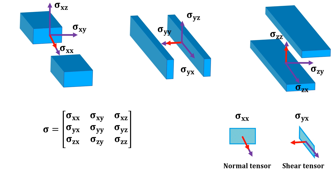A question may arise: why can't we add sigma-xx and sigma-yx together, since both have force in the same direction? Even though the direction of force is the same, we cannot add them, because the force in both components is applied to different cross-sectional areas. Sigma-xx has the area vector in the x direction, producing normal stress, while sigma-yx has the area vector in the y direction, so the force is perpendicular to the area vector and produces shear stress. Since the nature of the produced stress is different, the components cannot be added.